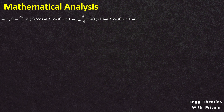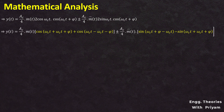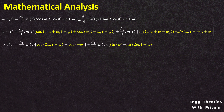Applying the product-to-sum formulas 2·cos(A)·cos(B) and 2·sin(B)·cos(A), Y(T) can be written as: Y(T) = (AC/4)·m(T)·[cos(2ωC·T + φ) + cos(φ)] ± (AC/4)·m̂(T)·[sin(2ωC·T + φ) − sin(φ)]. Gathering all terms, Y(T) equals (AC/4)·m(T)·cos(2ωC·T + φ) + (AC/4)·m(T)·cos(φ) ± (AC/4)·m̂(T)·sin(φ) ± (AC/4)·m̂(T)·sin(2ωC·T + φ).